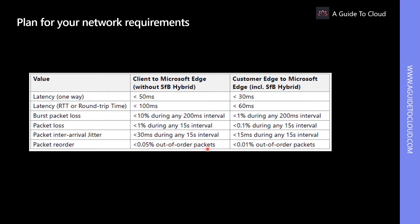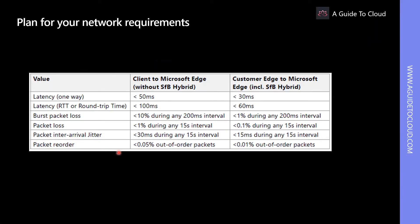For example, if a high number of users are using voice communication at the same time. Therefore, when planning the network requirements for Teams deployment, you must calculate the maximum number of concurrent users, including a reasonable buffer. The following table shows the recommended network capabilities in packet transmission quality.